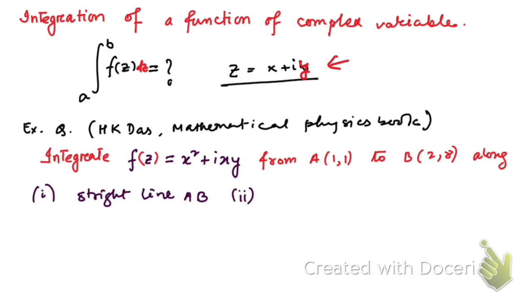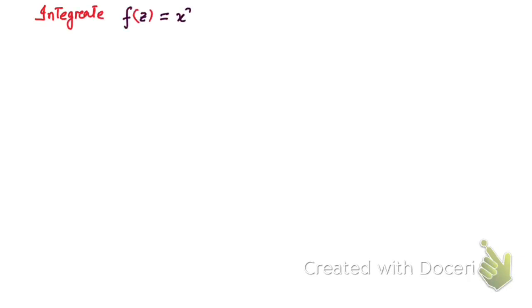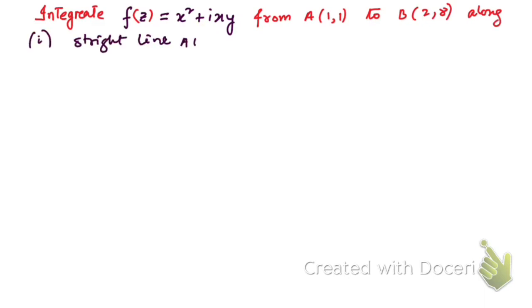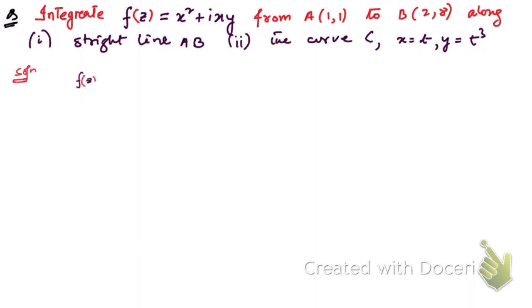First, we need to integrate along the straight line AB. Then we need to integrate along the curve defined by x = t and y = t³. Now let's go to a new slide. The function to be integrated is from point (1,1) to (2,8) along the straight line AB, and then along curve C where x = t, y = t³.